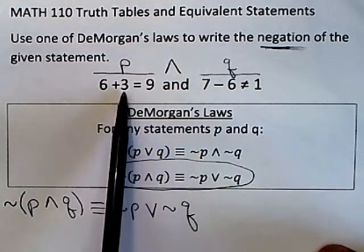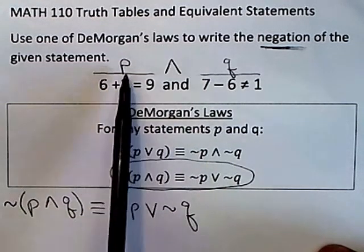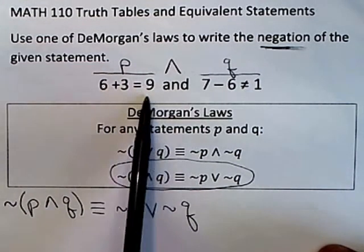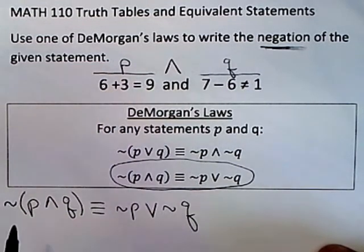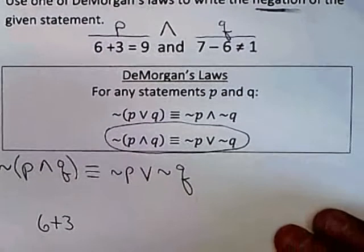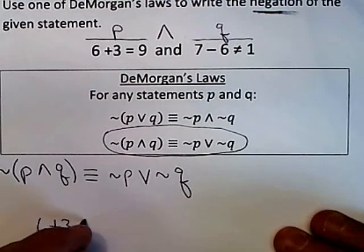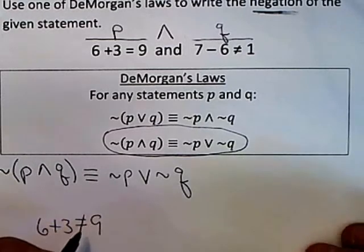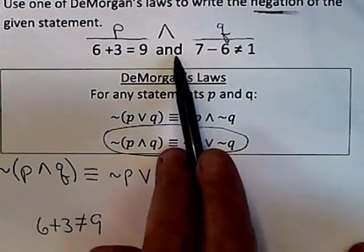So I would take the negation of P. Well if P says 6 plus 3 is equal to 9, then the negation of that would be 6 plus 3 is not equal to 9. And then the original AND and the negation becomes an OR.